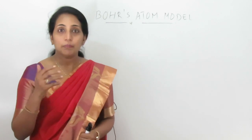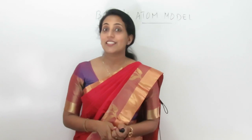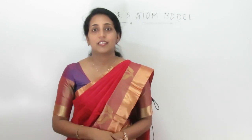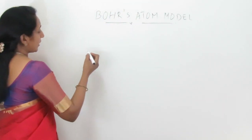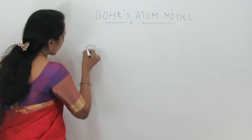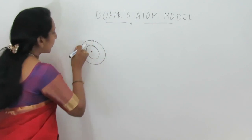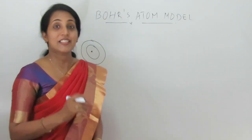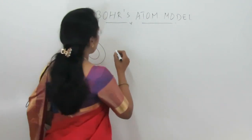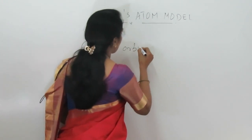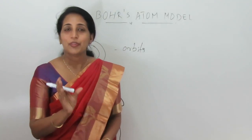According to Bohr's atom model, electrons are revolving around the nucleus in a fixed path, having fixed radius and energy. The nucleus has electrons at a fixed radius — that means concentric circles. This path is known as orbits. Orbits are fixed with fixed energy.